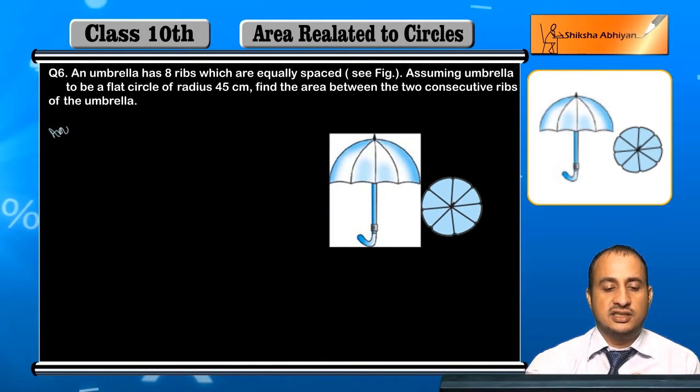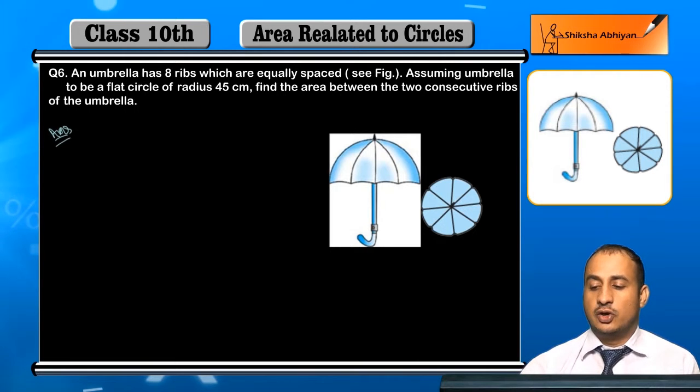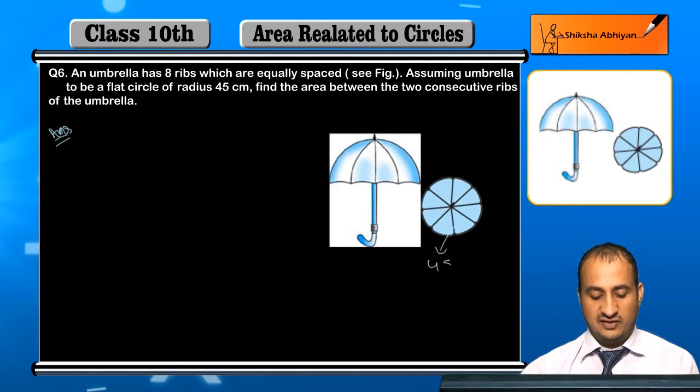As we have shown here, there are 8 ribs and every rib is 45 cm.